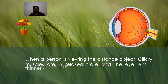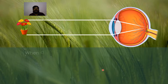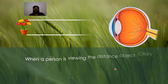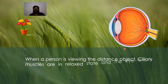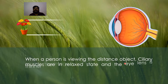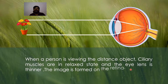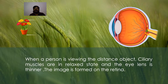When a person is viewing a distant object, the ciliary muscles are in a relaxed state and the eye lens refracts the incident rays exactly onto the retina. The final image is formed exactly on the retina.